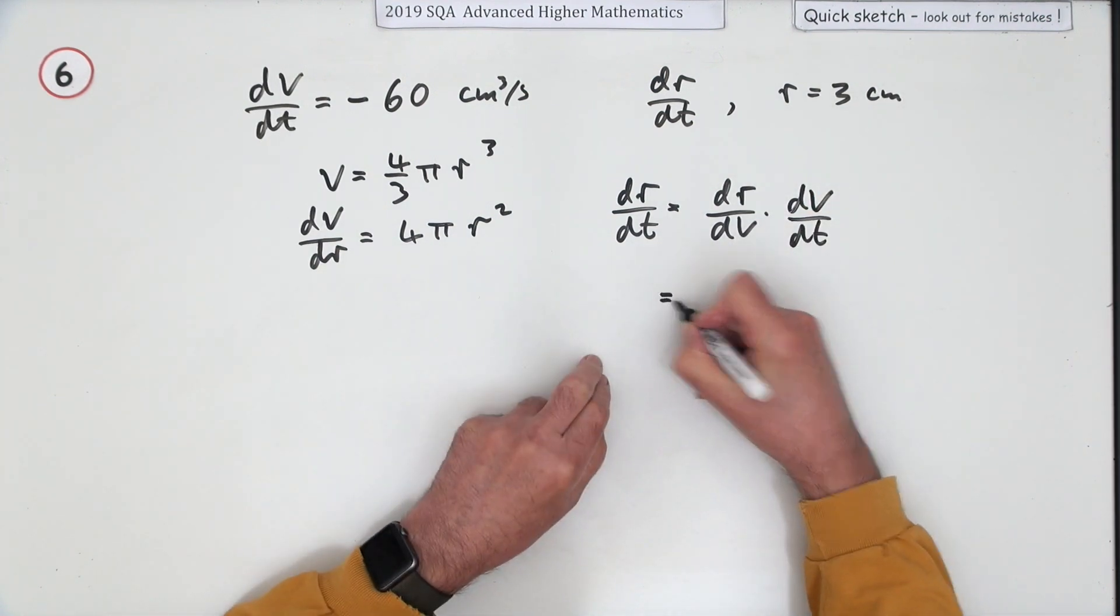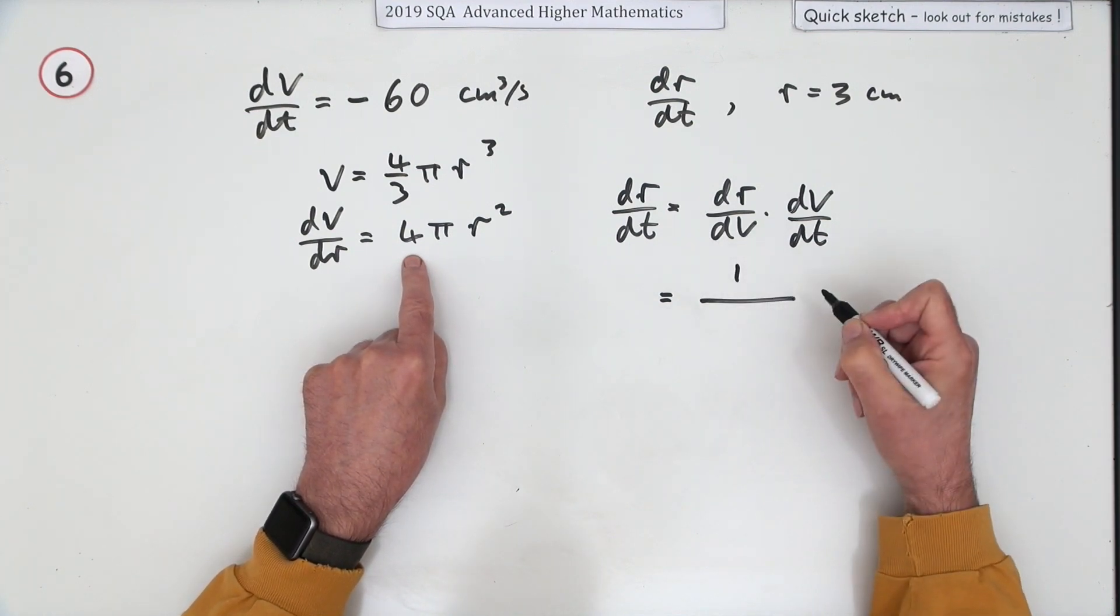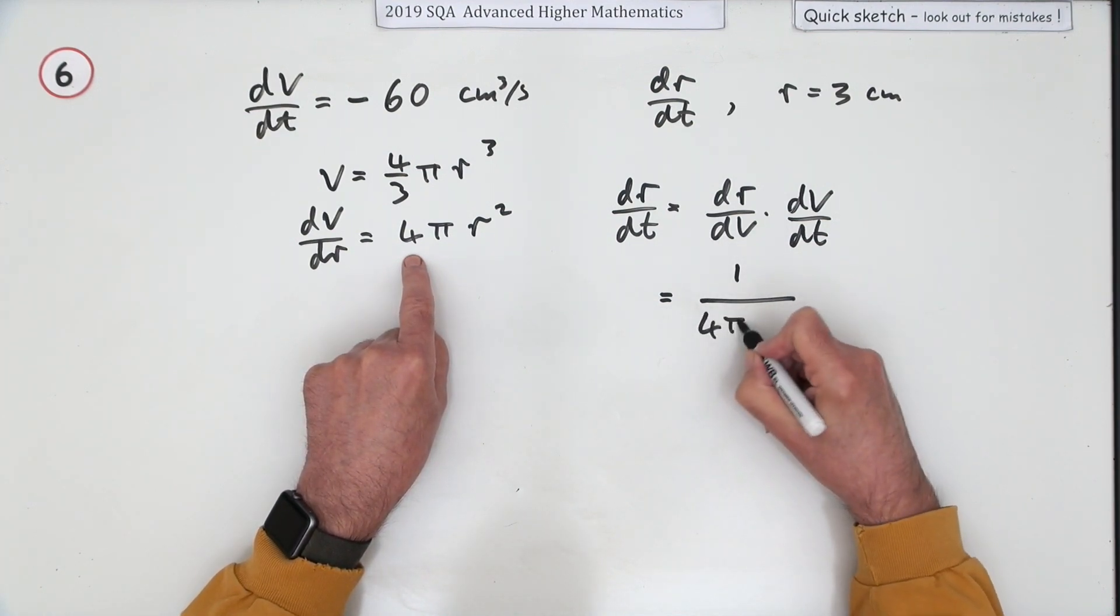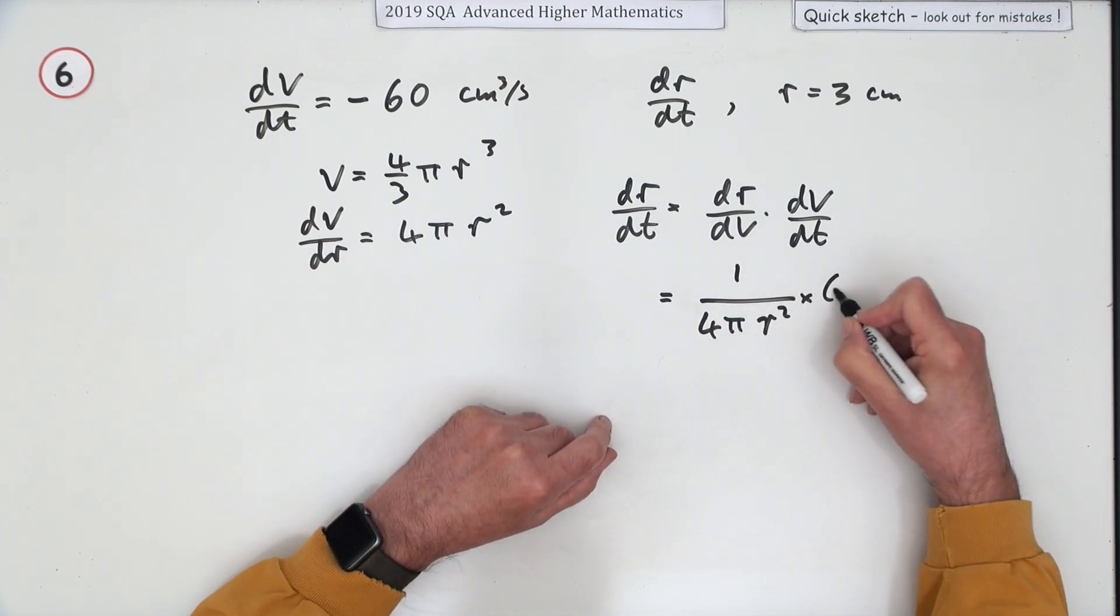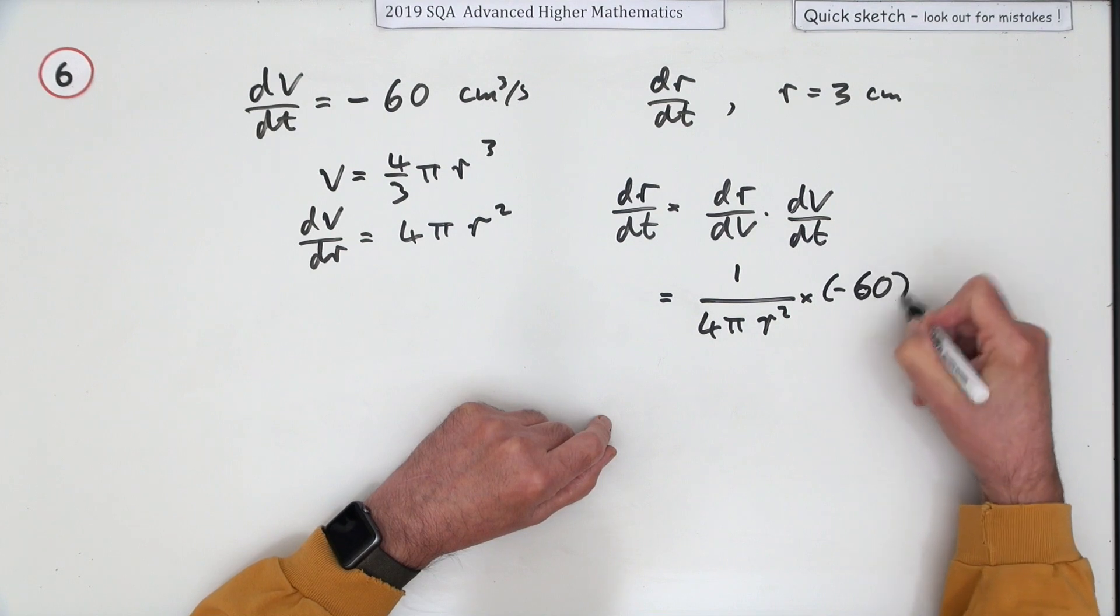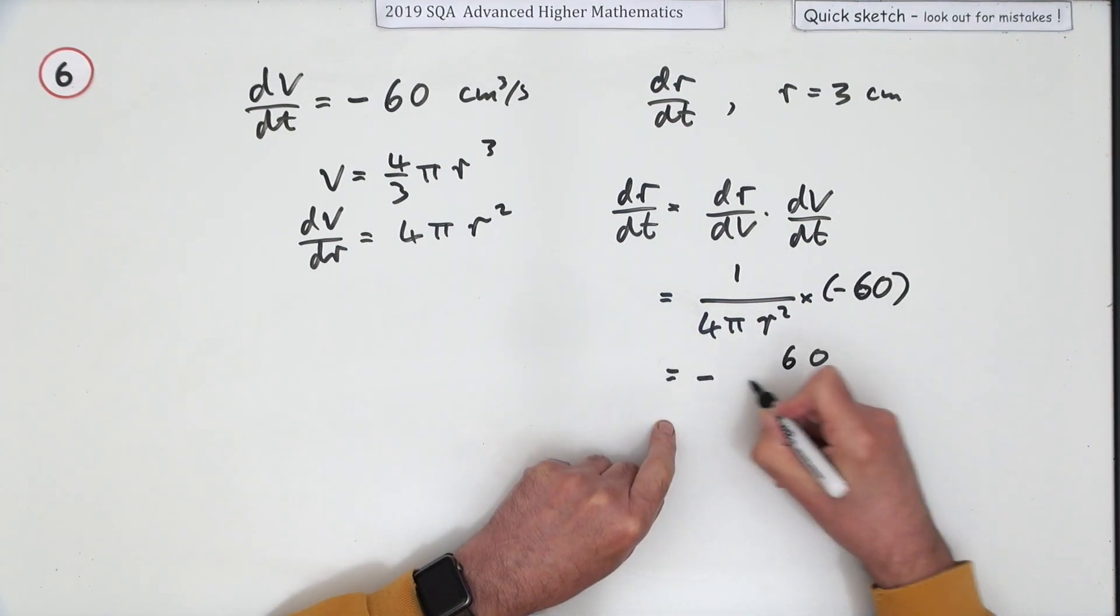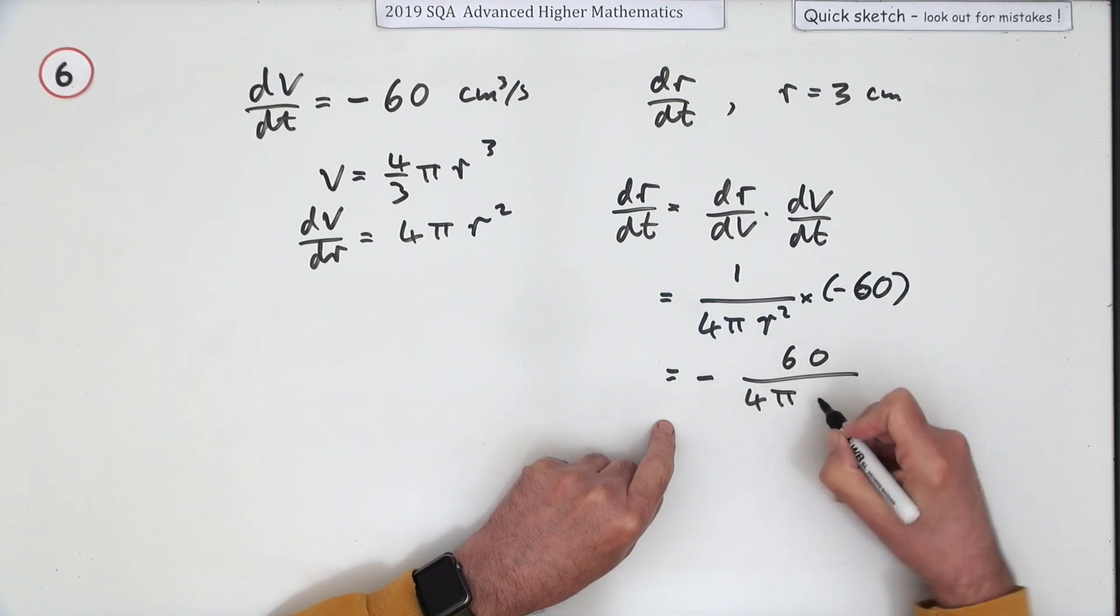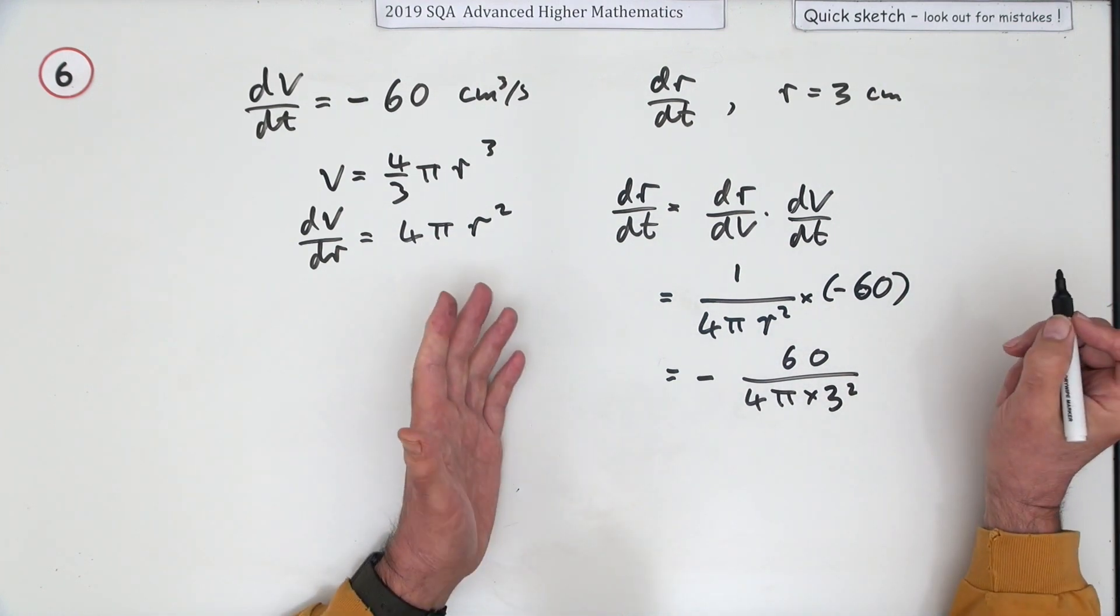So let's put it in then. What you've got is 1 over 4πr² times negative 60, so it's going to be negative 60 over 4π times—and r is 3—3 squared. Now that's not going to be anything particularly neat, really, is it?